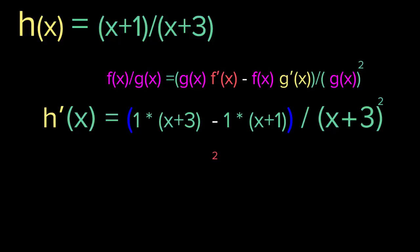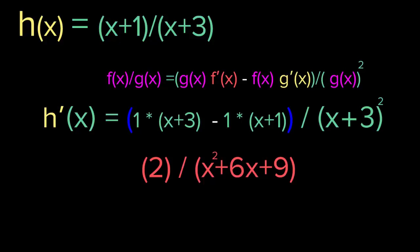The x's cancel and we get 2 on top. On the bottom we expand x plus 3 squared to get x squared plus 6x plus 9. So h prime of x equals 2 over x squared plus 6x plus 9.